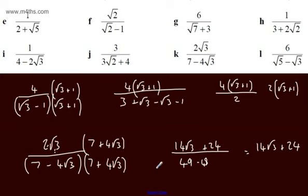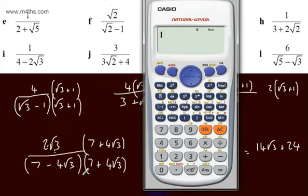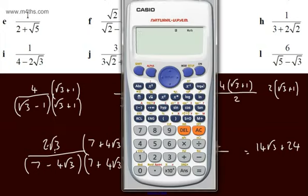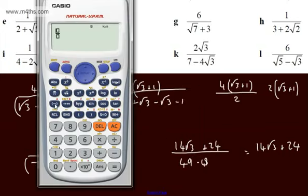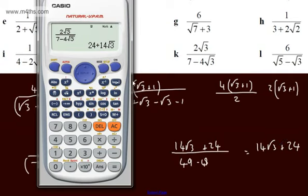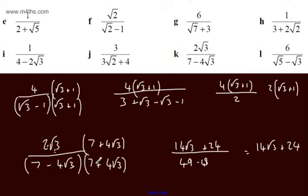That's quite a hard example. If you're in an exam, a GCSE exam for example, you would show all your workings. But after a while you'll spot it's going to be that number squared minus that number squared.